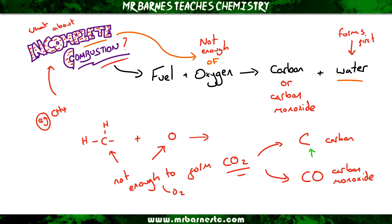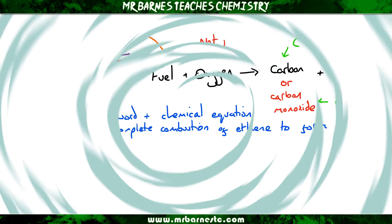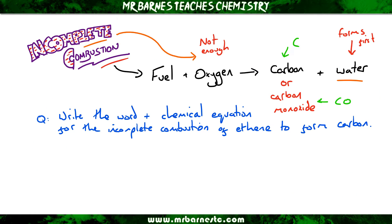The question will always state what is produced, and then all you'll have to do is produce a word or balanced equation based on what the question says. For example, this question says: write the word and chemical equation for the incomplete combustion of ethene to form carbon.